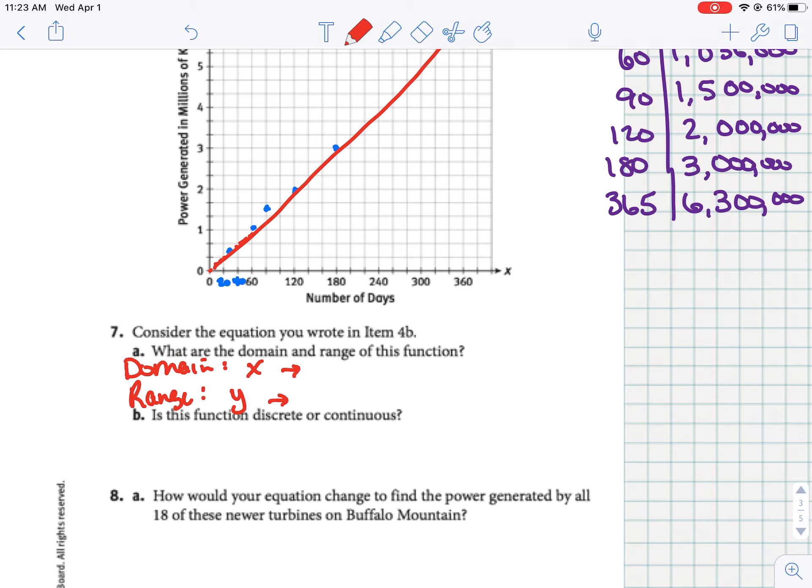So our x values were time. Well, we know time can't be negative. That doesn't make sense, but we could have done this for 0 days. So our domain has to be numbers that are greater than or equal to 0. Range is our kilowatts. Well, we can't produce negative power, so our kilowatts also have to be greater than or equal to 0.